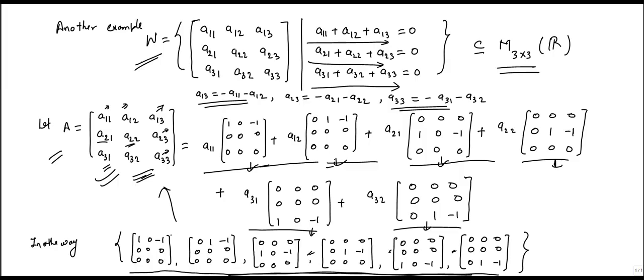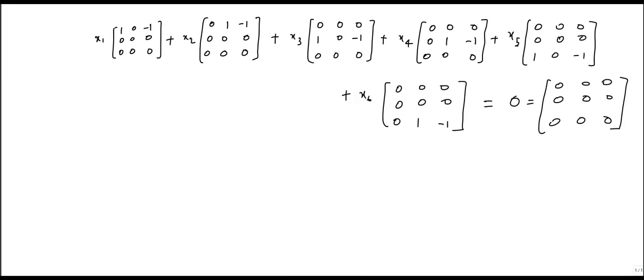Now, we will show that these matrices are linearly independent. And we know how we will show those vectors are linearly independent. Take the linear combination of these six matrices and equal it to 0.